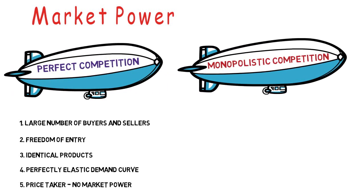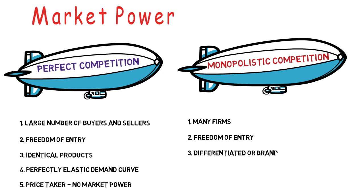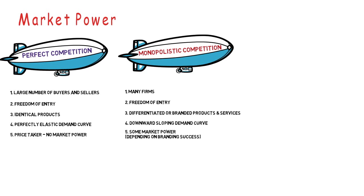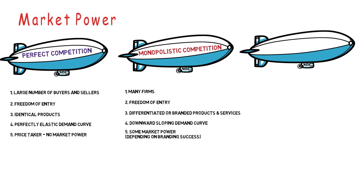Moving to a slightly less competitive market — monopolistic competition — we again have quite a number of firms competing with one another. This could be the restaurant market, fast food, or cereal producers, where there is freedom of entry. The key aspect is that they differentiate or brand their product, making it look different from other companies. Because of this they face a downward sloping demand curve and have some market power, depending on the branding success.